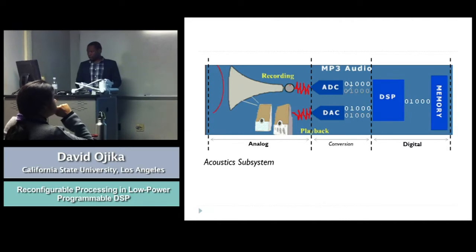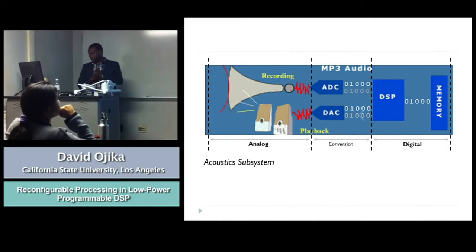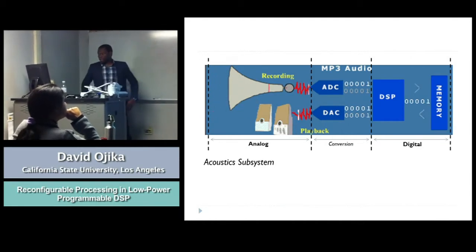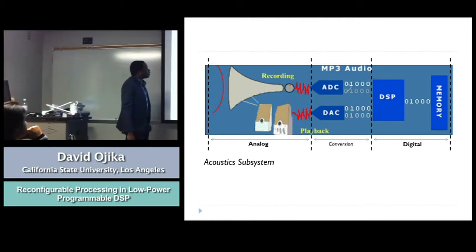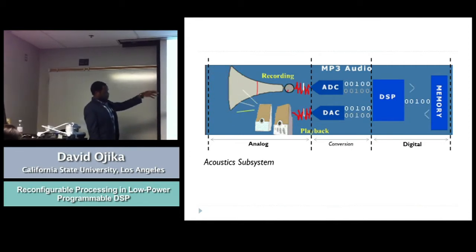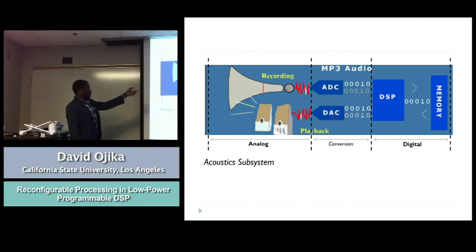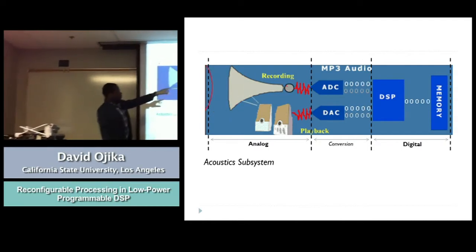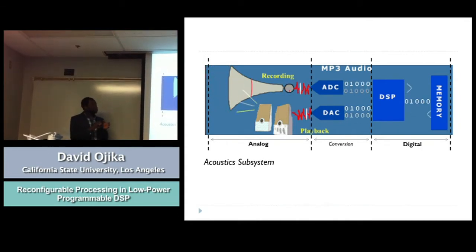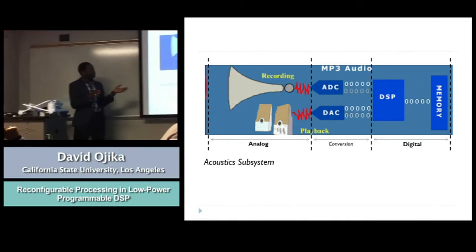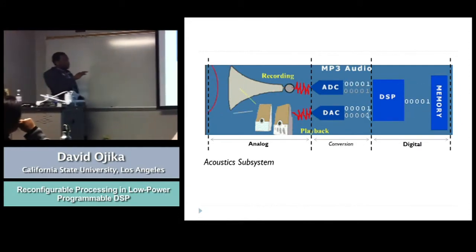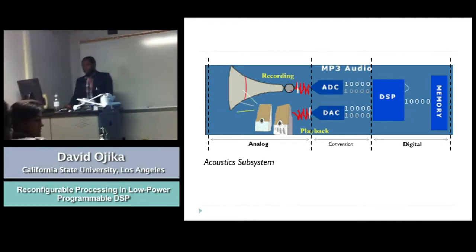Here we have an MP3 audio system, which is part of the acoustic subsystem. As you can see, we have sound being recorded. This is part of the ADC, and onto the DSP the signal is processed, saved into memory, and then taken back to the DSP. It's converted from digital back to analog and played back. Pay attention to the blue block diagram — DSP and memory. Those are the digital blocks where you can find ways to reduce power in the whole system.